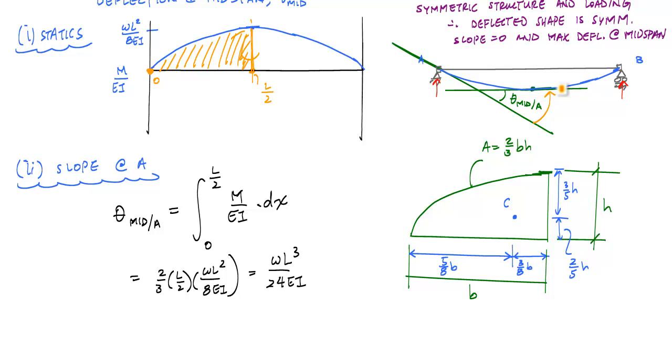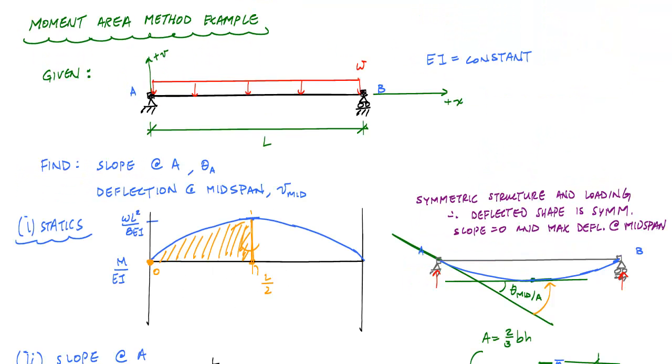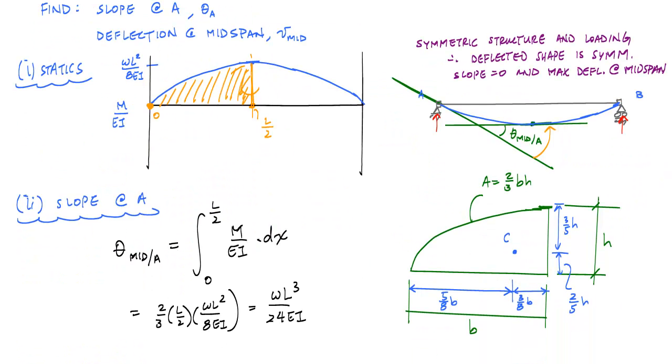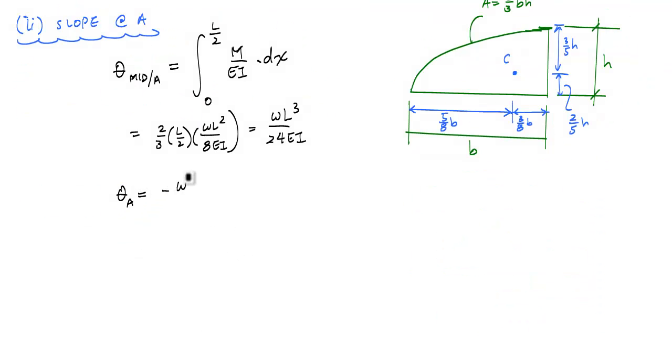But when I look at it in terms of my coordinate system that I established for this beam, this V and the X, the slope of point A is like this, is downwards, if you will. And that is a negative slope in this VX coordinate system. So the actual slope of point A is equal to minus WL cubed over 24 EI. All right. That's one.